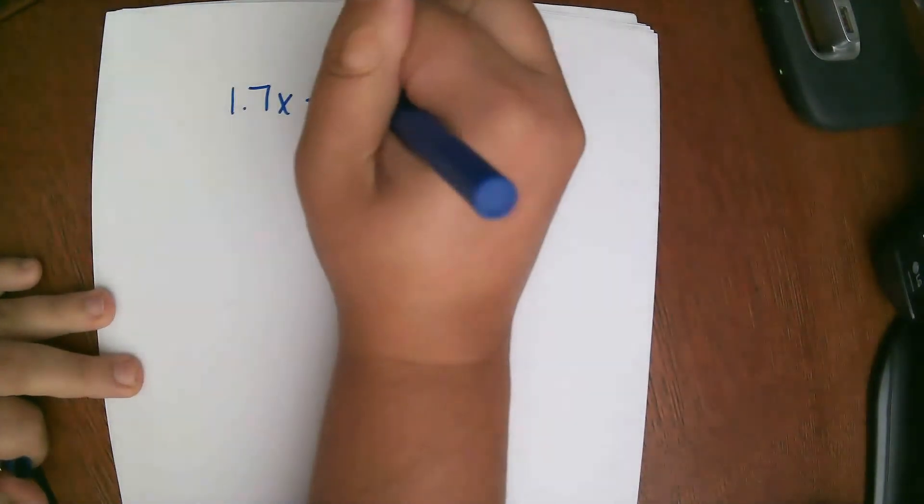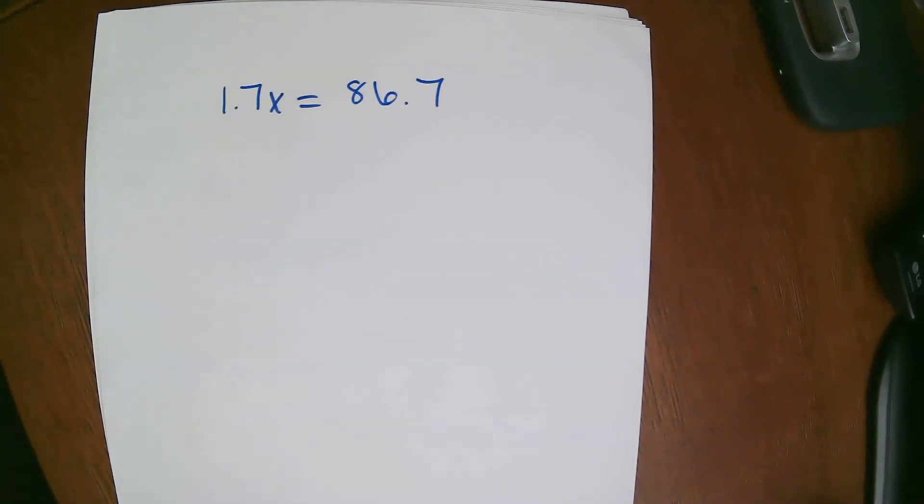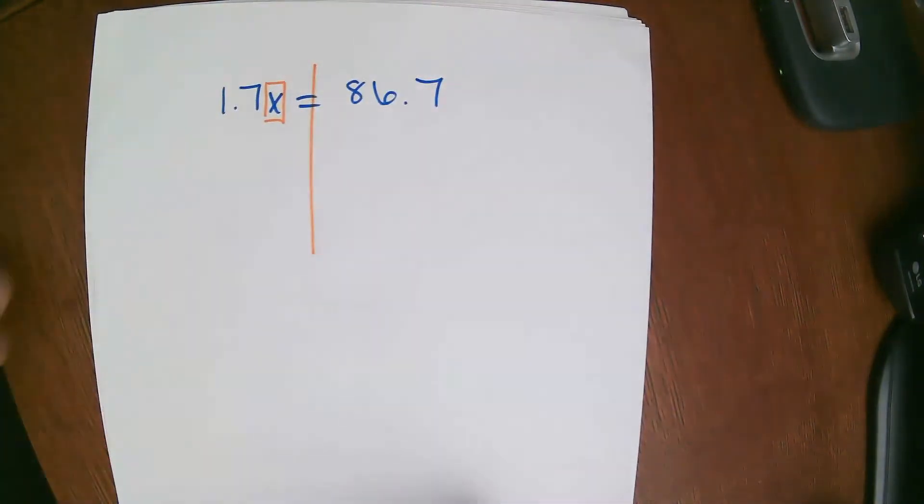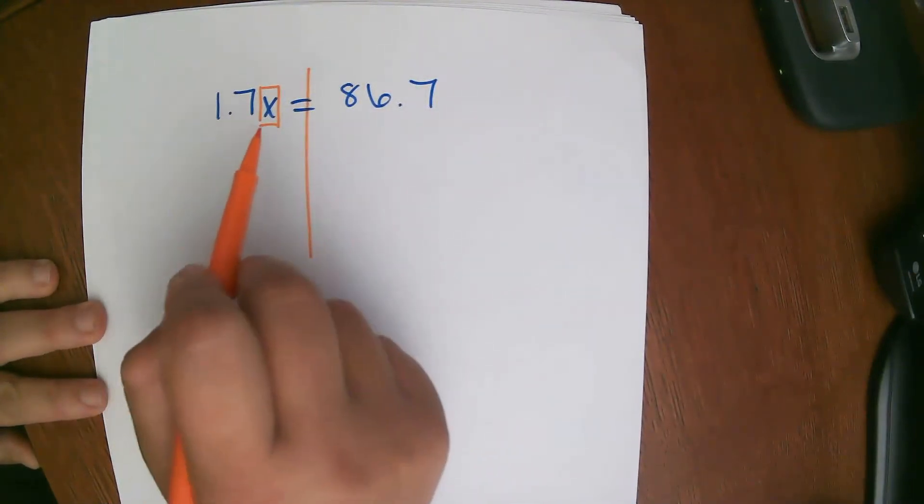So I have an example. 1 and 7 tenths times x equals 86 and 7 tenths. So the steps are the same. Box the variable. Draw the wall. Those are your visual cues. And in fact, if you freeze up on a test or if you have any sort of test anxiety, if you have these sort of visual cues in place, those will kind of jumpstart your brain and activate that memory, that long-term memory to get you going in times when you're a little bit stressed out. So these actually work really nicely.